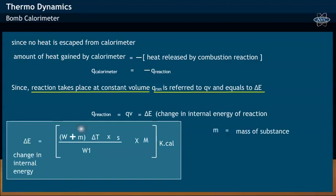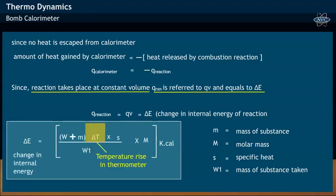In the equation, m is the mass of the substance, M is the molar mass or molecular weight of the substance, s is the specific heat, while W refers to the mass of the substance. By noting down the temperature rise in the thermometer, the change in temperature, or ΔT, may be calculated.